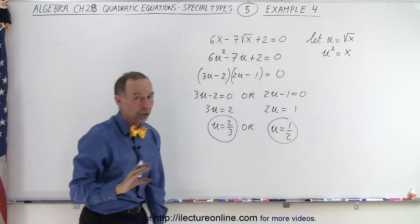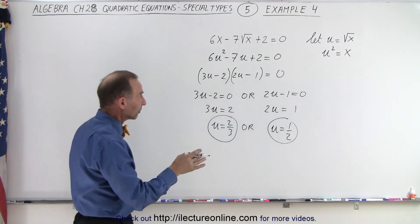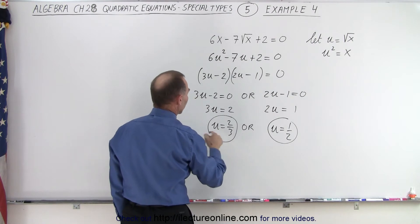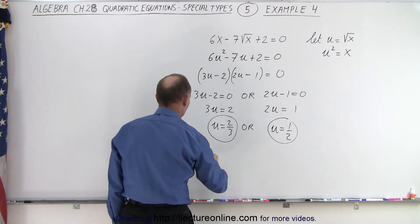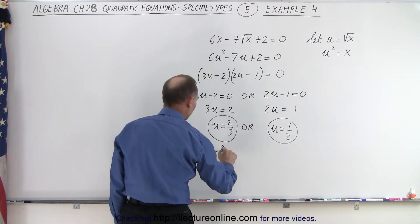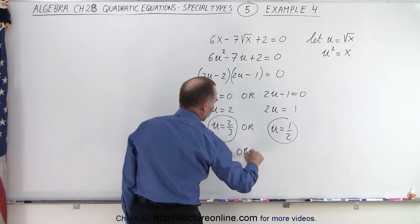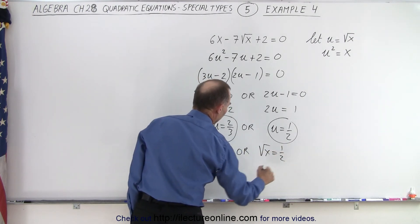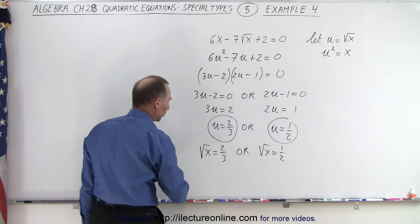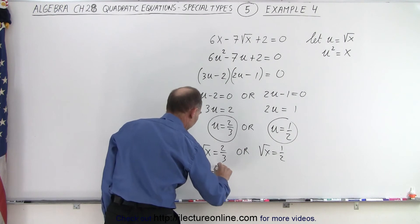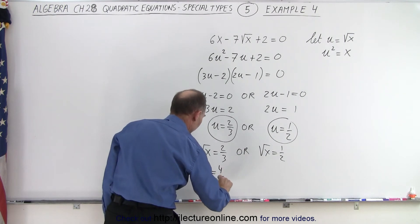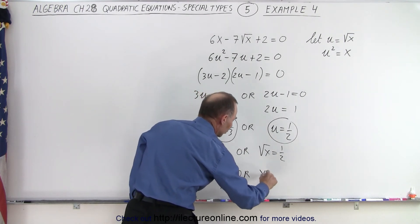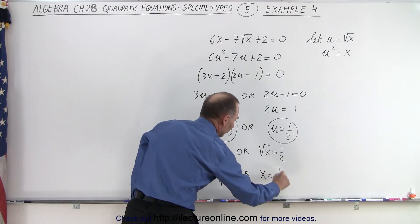But we're not looking for u — we're looking for x, so we substitute back. Since u is the square root of x, we have the square root of x equals 2 thirds, or the square root of x equals 1 half. Squaring both sides gives x equals 4 ninths, or x equals 1 fourth.